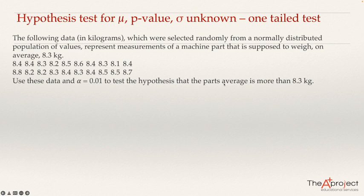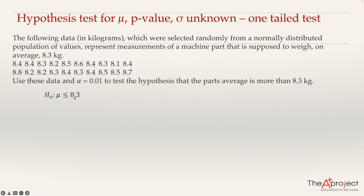The research hypothesis is that the average is more than 8.3 kg. This will be the alternative hypothesis because it doesn't have an equal sign — it's 'more than.' So the null hypothesis will be the opposite: mu less than or equal to 8.3 kg. If we reject the null hypothesis, we have proved this research hypothesis.